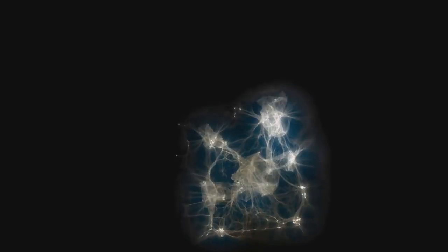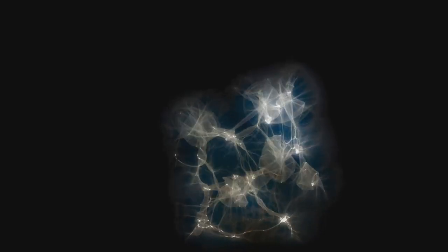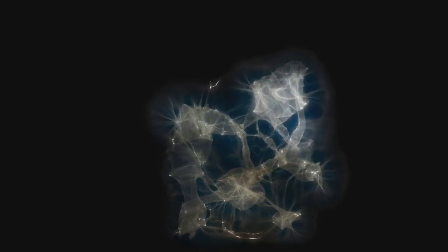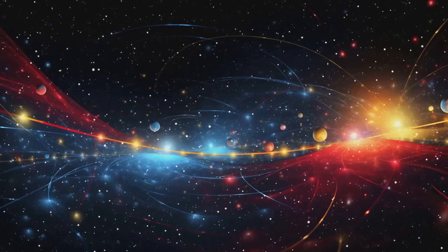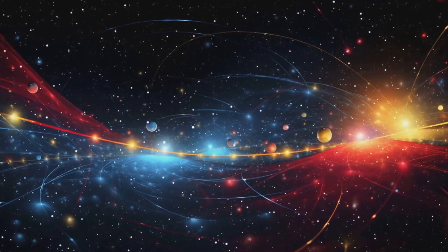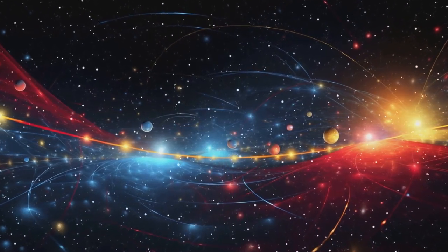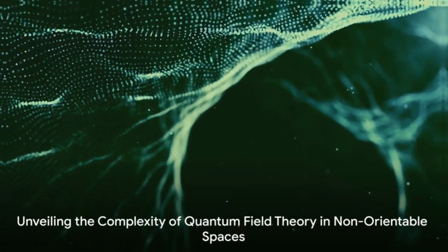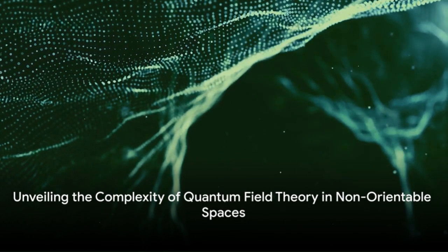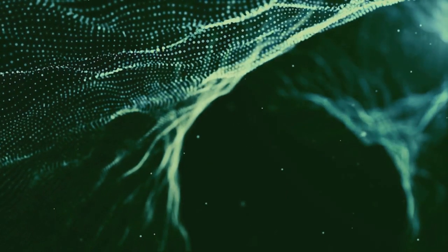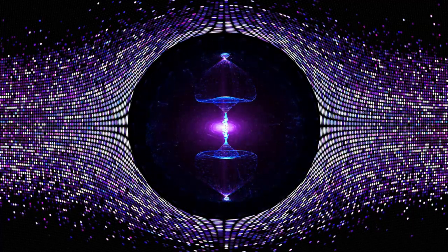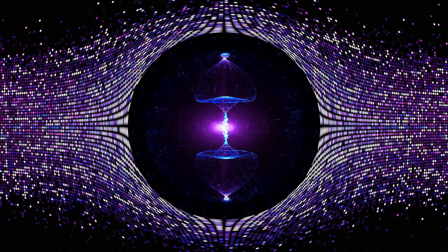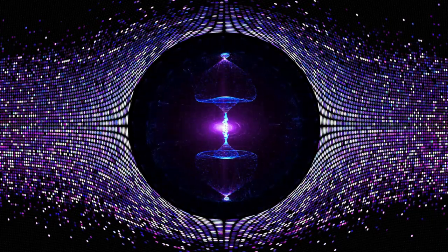The revelation is that quantum fields in these non-orientable spaces exhibit self-similar properties. This means that they behave in a way that is fractal, repeating their behavior at different scales. This fractal nature influences how fields interact with each other, leading to new, fascinating phenomena. It's like looking at the universe through a kaleidoscope. The same fundamental particles and fields are there, but the patterns and interactions they form are novel and intricate, revealing hidden aspects of quantum field theory that we're just beginning to grasp.